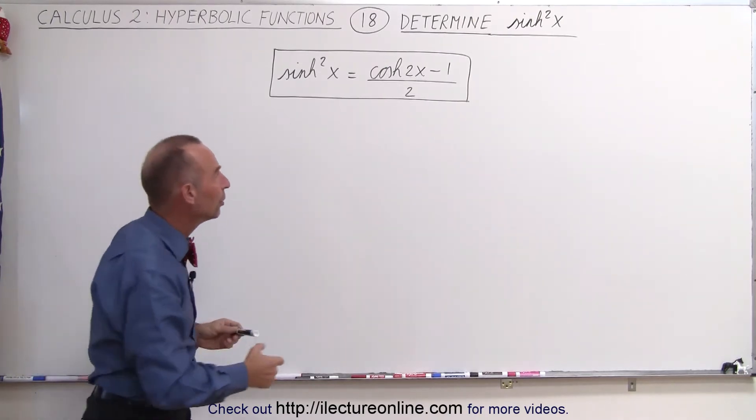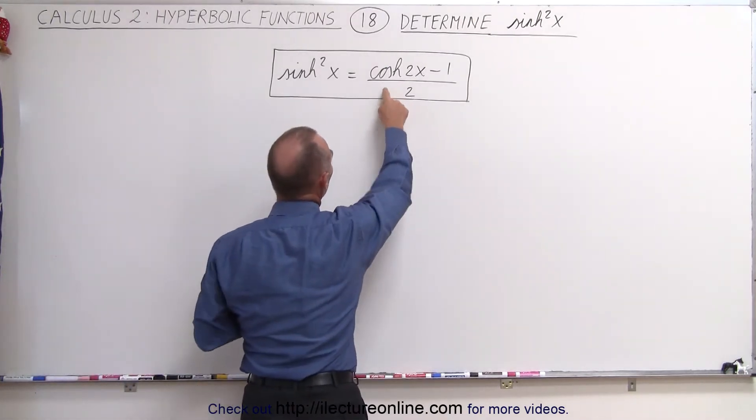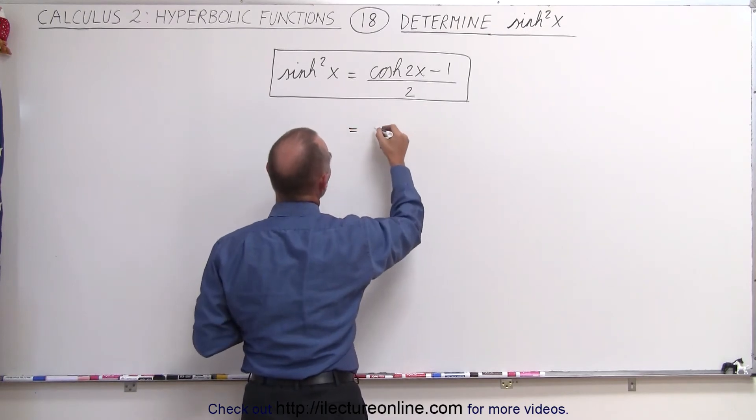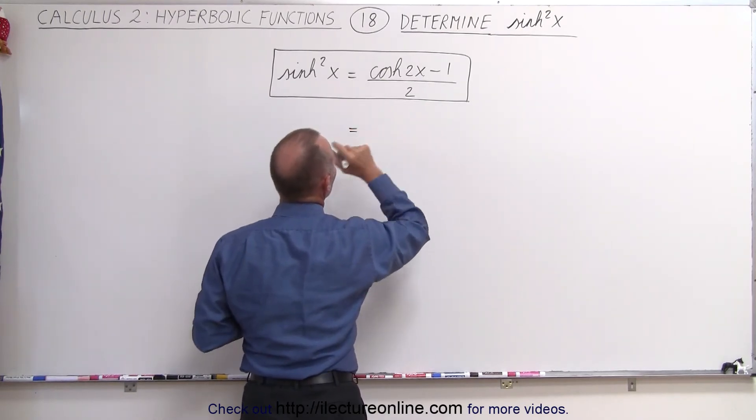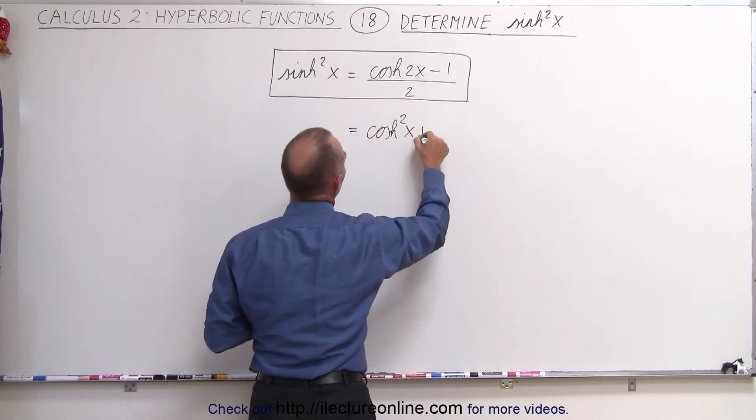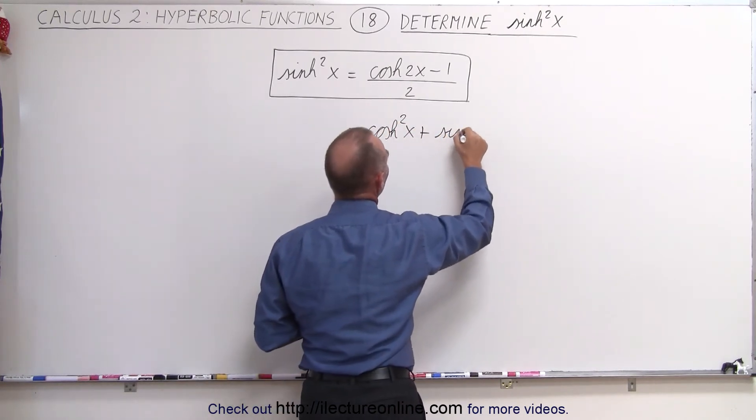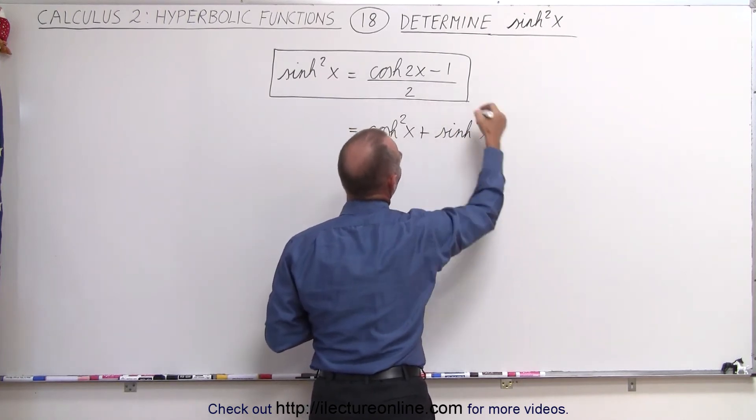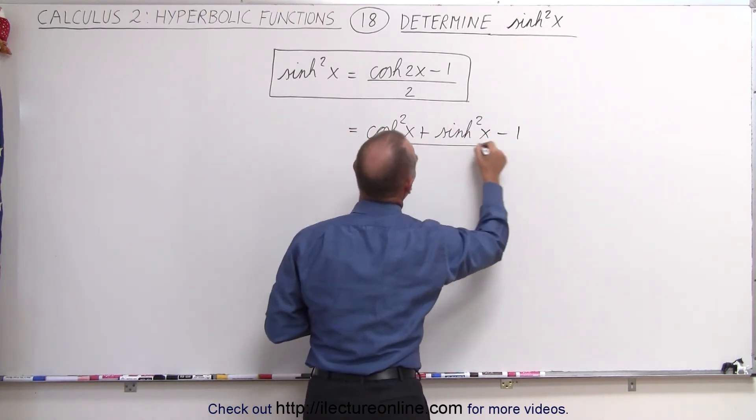So we're going to rewrite the hyperbolic cosine of 2x. This becomes equal to the hyperbolic cosine squared of x plus the hyperbolic sine squared of x, and we have minus 1 divided by 2.